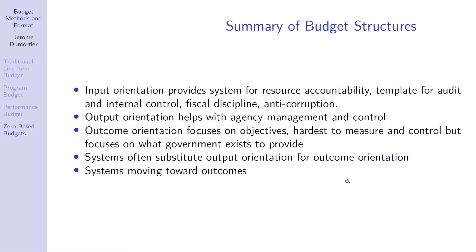In summary, budget structures can be oriented towards inputs, which is great for resource accountability and fiscal discipline; focused on outputs, which helps agencies with management and control; or outcome-focused, as with performance-based budgets — for example, the reading scores of children. However, performance budgets are very difficult to measure, it is difficult to develop initial outcome measures, and it is also difficult to control exactly what the government needs to do to achieve those goals.